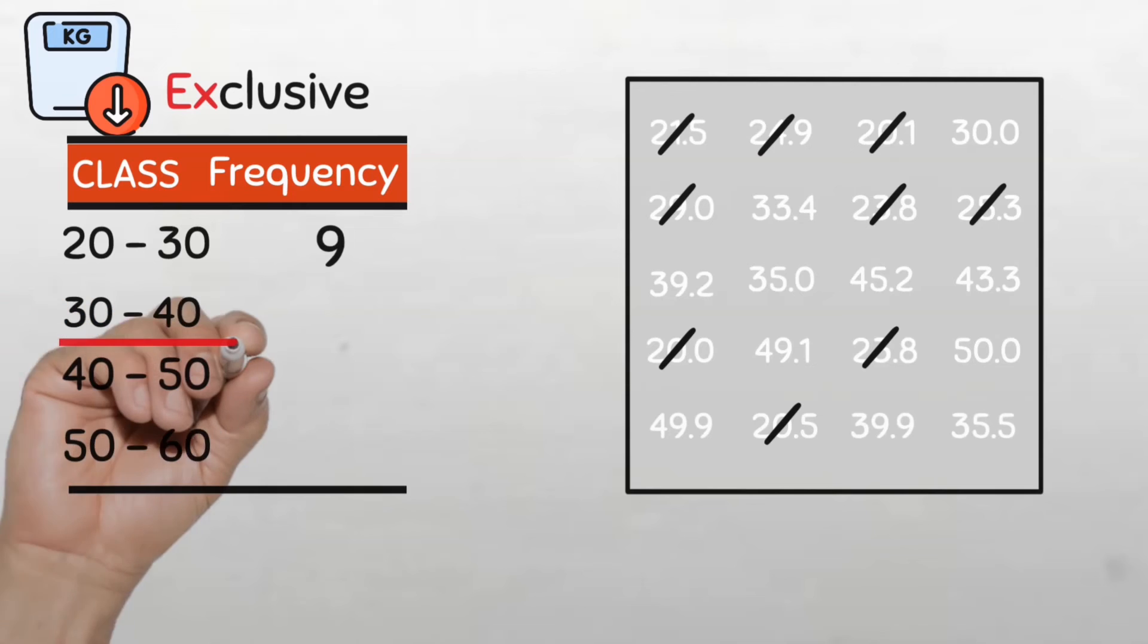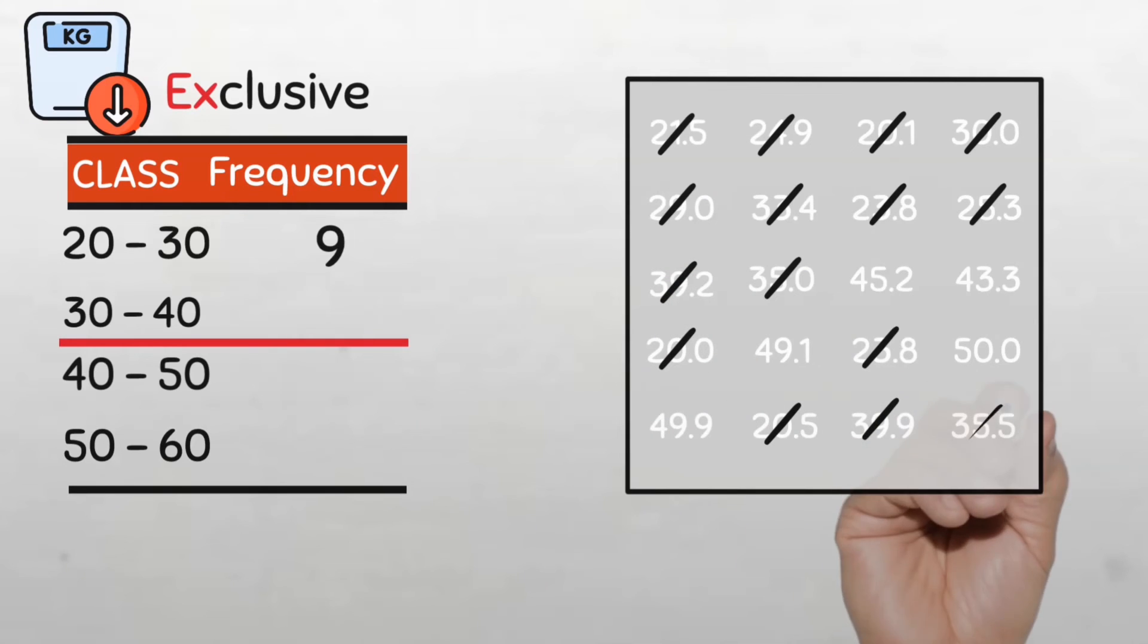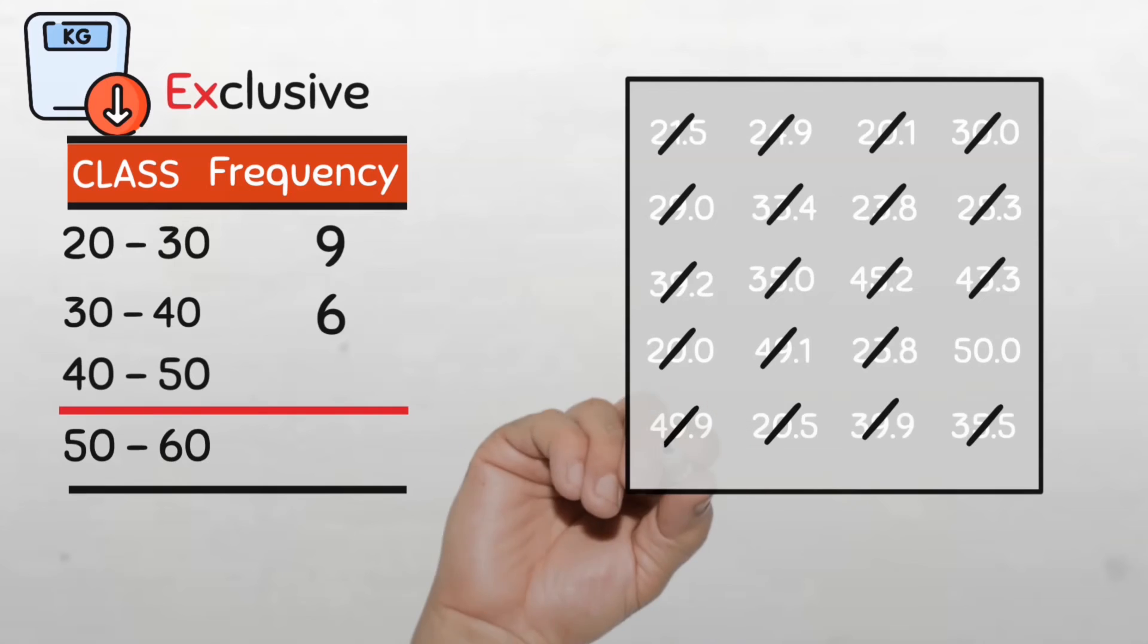For the 30 to 40 kg class, 30.0 will go, 33.4 will go, 39.2, 35.0, 39.9 and then 35.5 and that's 6. For the 40 to 50 class, 45.2 will go, 43.3, 49.1 and 49.9.